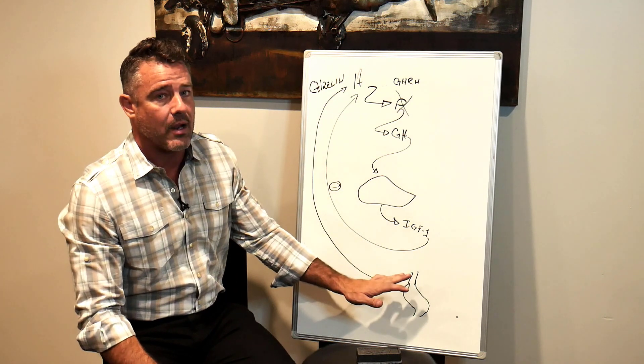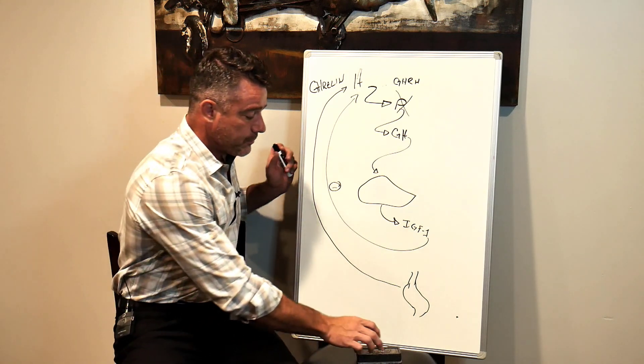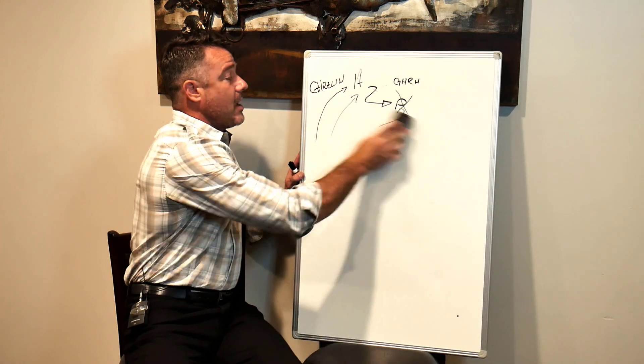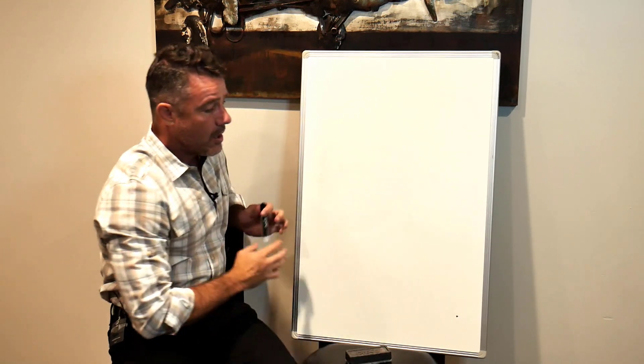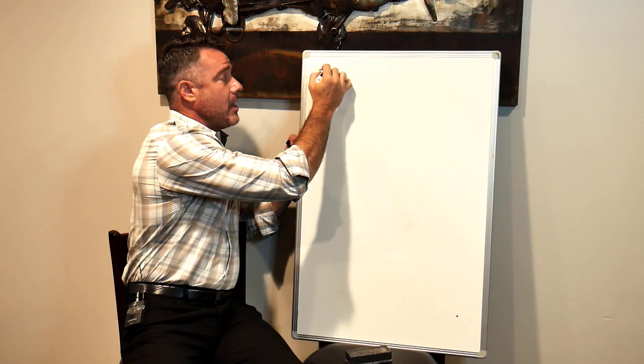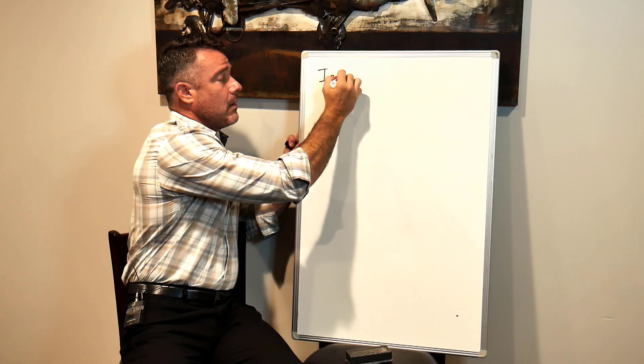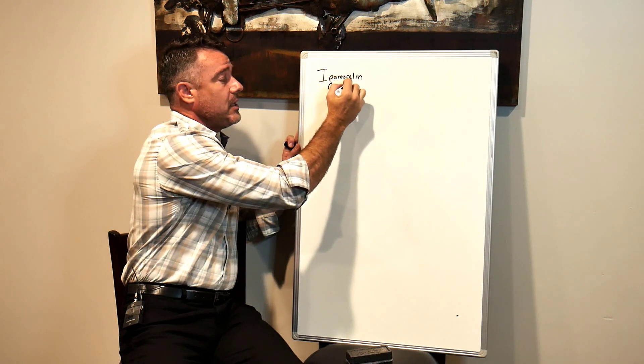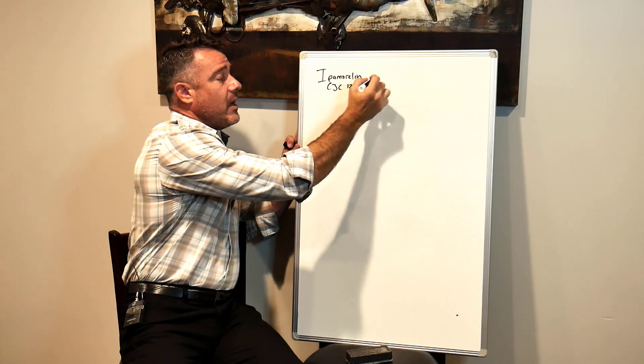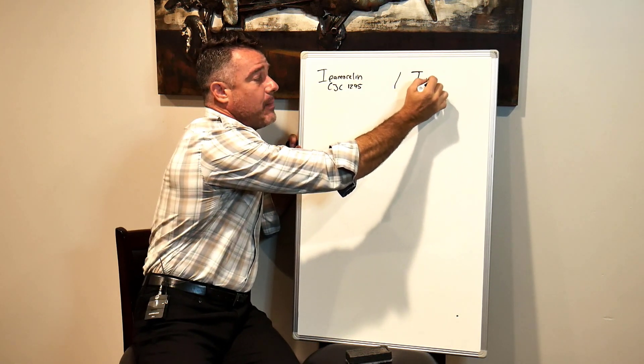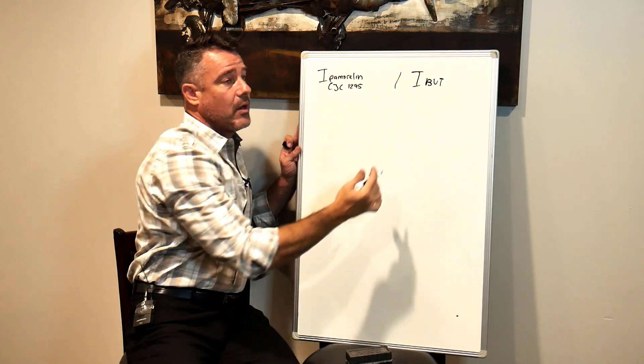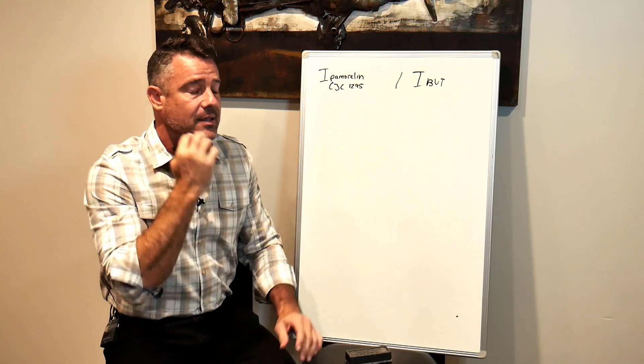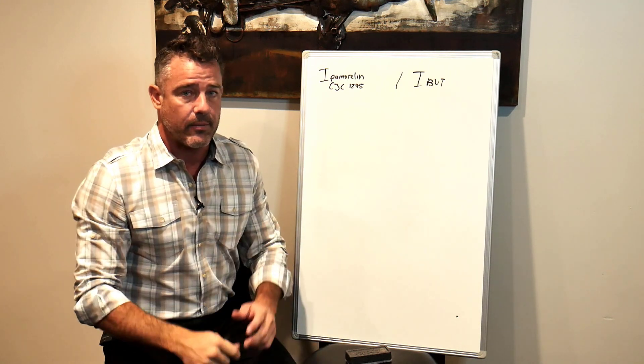These are two primary precursors to growth hormone production, and these actually represent our two primary mechanisms or peptides. One of our peptides is called Ipamorelin, and it's compounded with something called CJC-1295, and the other one is Ibutamoren, or it's also known as MK-677. That gets listed as a SARM a lot of times. A SARM is a selective androgen receptor modulator.